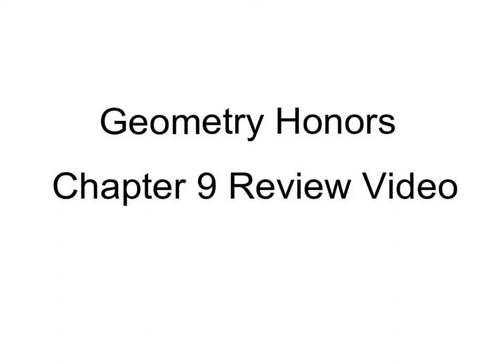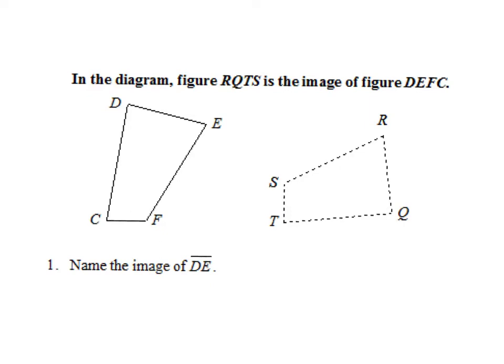This is your Geometry Honors Chapter 9 review video. In this problem, they tell me that DEFC is our pre-image and RQTS is our image. So this is the before, this is our after. They want to know what is the image of DE. So where does this segment go? If they state the names in the sentence, those names are given in a very special order. D and E are the first two letters of this name, so your answer needs to be the first two letters of this name. The answer, the image of DE is RQ.